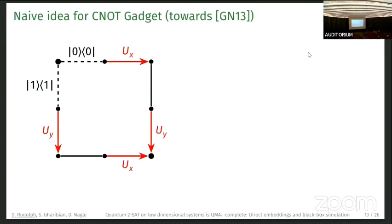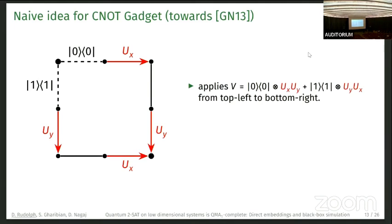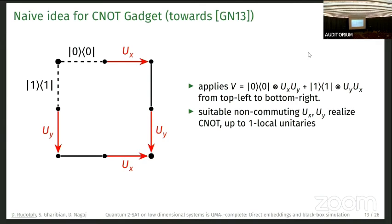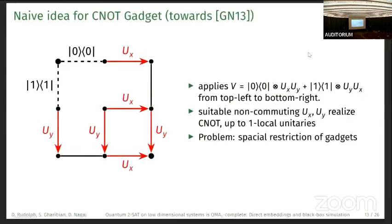The naive idea to construct the gate gadget is to start at the top-left with input, bottom-right as output. On ket-zero, apply U_x then U_y along one path; on ket-one, apply U_y then U_x along the other path. For suitable non-commuting U_x and U_y you can realize a CNOT gate up to one-local unitaries — shown by Nagaj. However, this simple idea does not work due to spatial restrictions on gadgets: one-local transitions must apply across the whole row or column. In practice we only get something like a commutative diagram, but U_x and U_y are explicitly chosen not to commute, so the system would be frustrated. A more complex construction is needed.